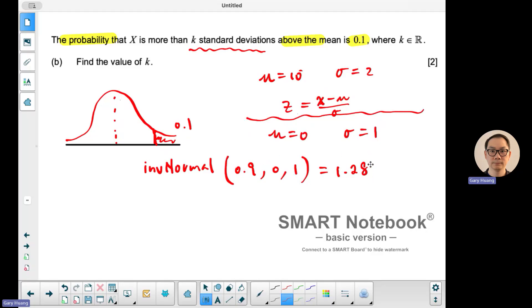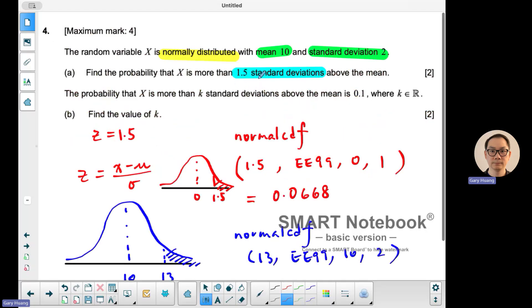So that's the trick to this question. They did not give you the x value. They give you how many standard deviations away, which is actually a hint for you to use the z-score. That is number 4 of paper 2. Thank you for watching.